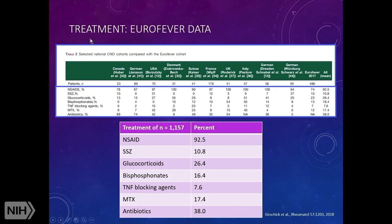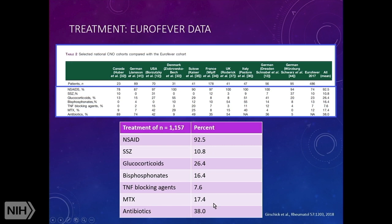The Eurofever data shows a large number of patients with CNO — 486. About 92.5% were on an NSAID. Many were on antibiotics, which reflects cases still being considered infectious. Glucocorticoids were used in 25%. Sulfasalazine, bisphosphonates, and TNF inhibitors were used in roughly 7.5 to 11%, and methotrexate in 17%.